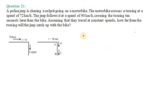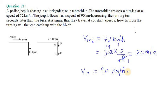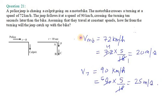We are given the speed of the motorbike: Vmb equals 72 km per hour. Converting to meters per second — 72 multiplied by 5 over 18 — gives us 20 meters per second. Similarly for the jeep, 90 km per hour multiplied by 5 over 18 gives us 25 meters per second. So the velocity of the motorbike is 20 m/s and the speed of the jeep is 25 m/s.